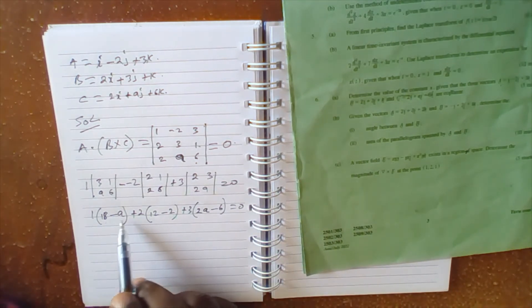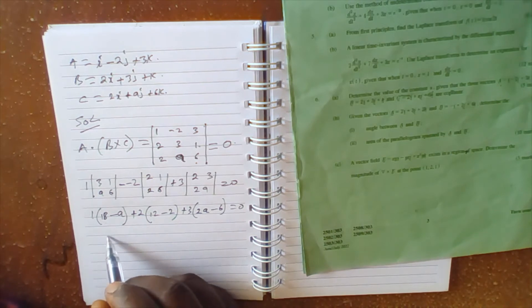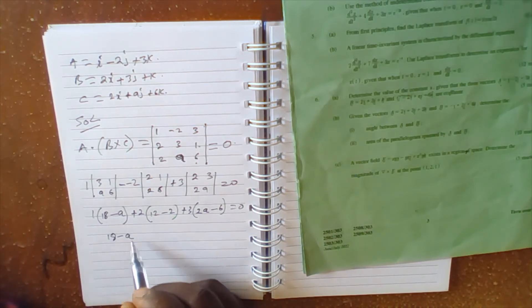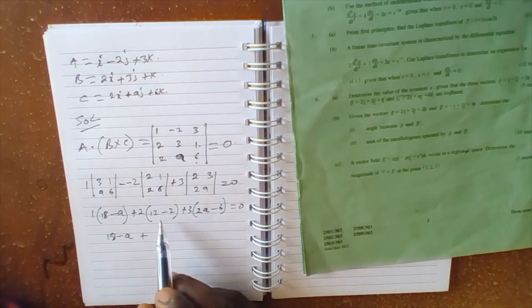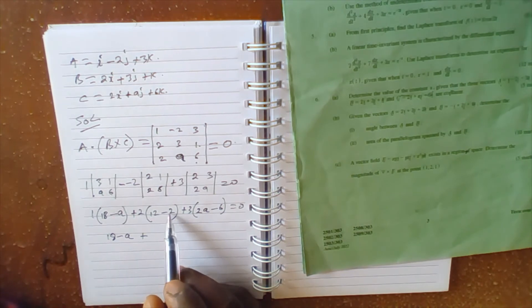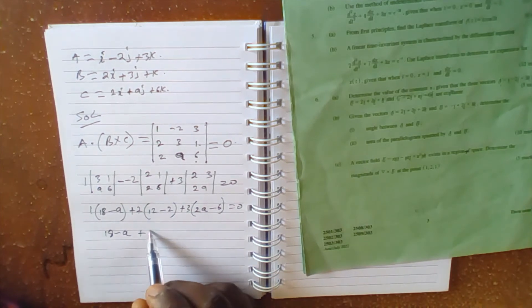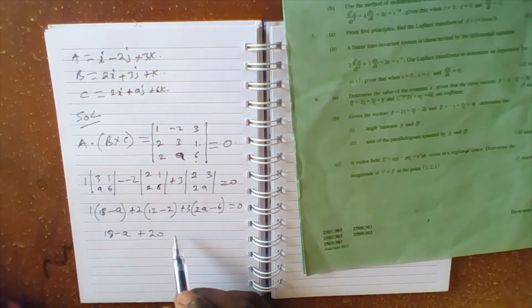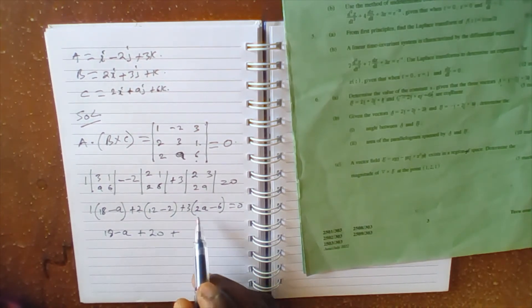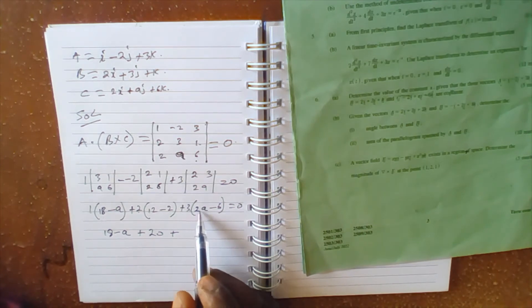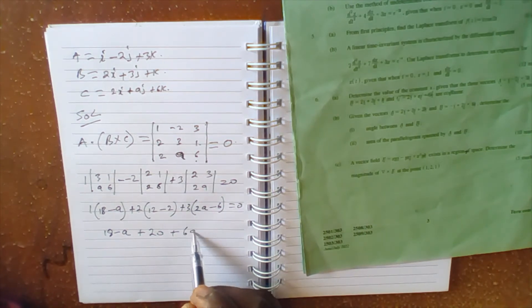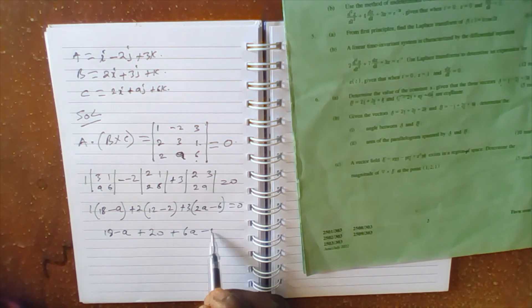So we now multiply through. Here we have 18 minus a, plus 12 minus 2 is 10 times 2 is 20, then plus 3 times 2a is 6a minus 18.